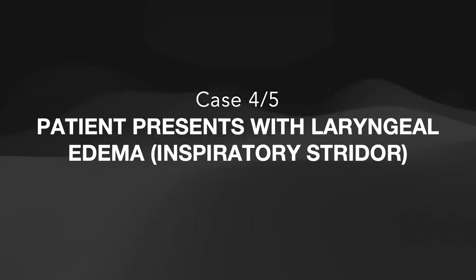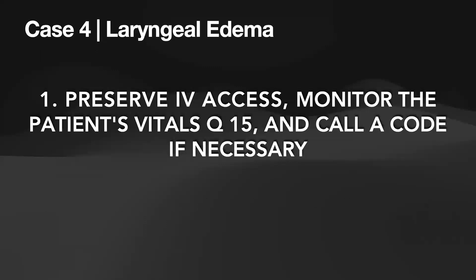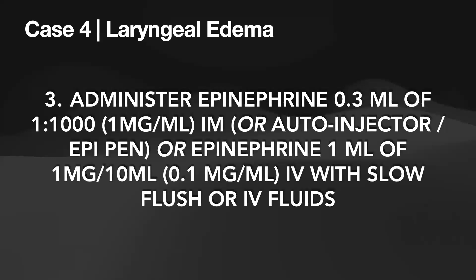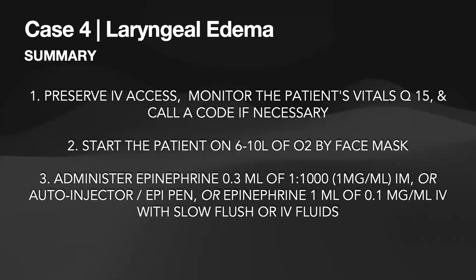Case number four: a patient presents with laryngeal edema or inspiratory stridor. First, preserve IV access, monitor the patient's vitals, and call a code if necessary. Second, start the patient on 6 to 10 liters of oxygen. Third, administer epi 0.3 mils of 1 in 1000 IM. Here is the summary slide for case number four.